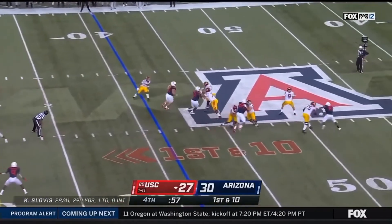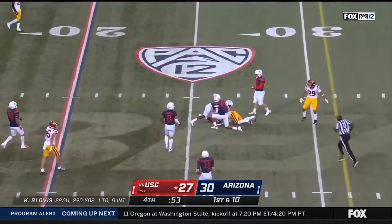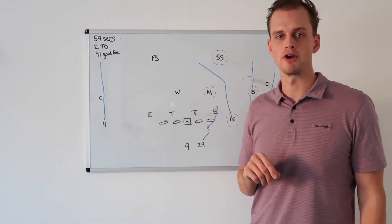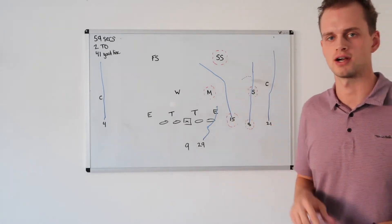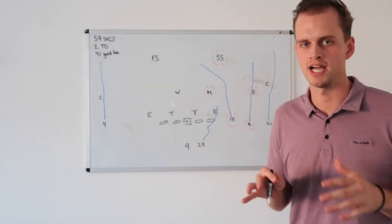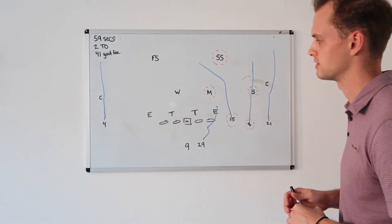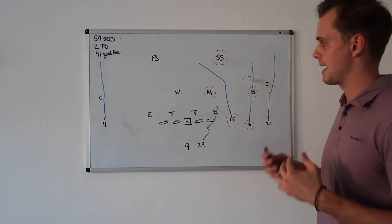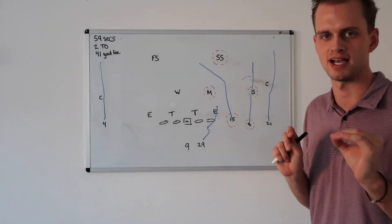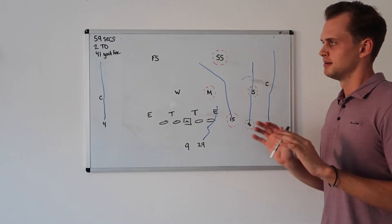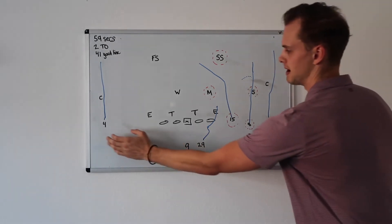Slovis guns it. Over the middle. Caught. And another first down. 59 seconds left. Starting on the opponent's 41-yard line, still got two timeouts. Now if you're Keaton Slovis, you've got to start thinking about field goal range. I'm only down by three. I just can't turn the ball over. That's the worst possible thing you can do. But I love the call, once again, by Graham Harrell.